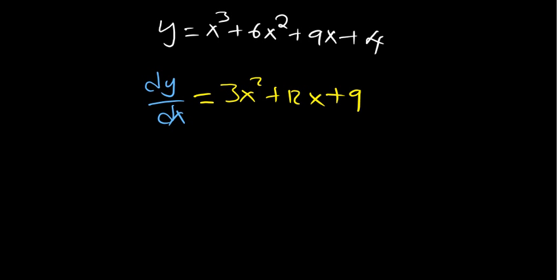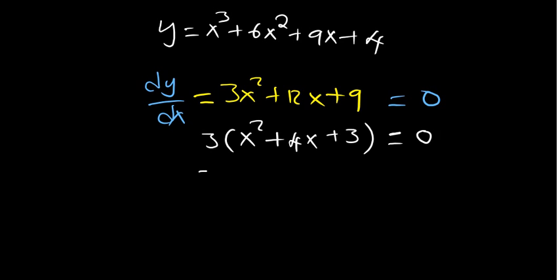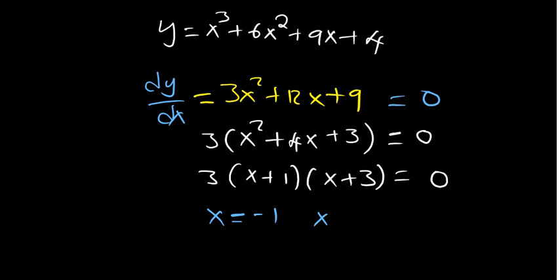Stationary points are critical points where dy/dx equals zero. Setting the derivative to zero, we solve the quadratic. Factoring out 3 gives x² + 4x + 3 = 0, which factorizes as (x + 1)(x + 3) = 0. So the critical points are x = -1 and x = -3.